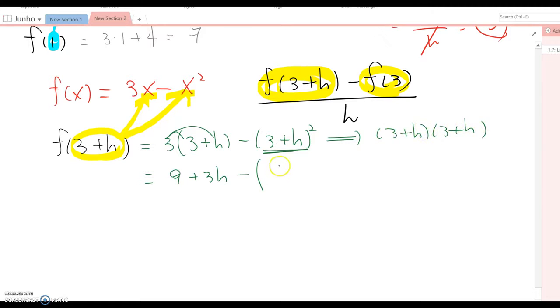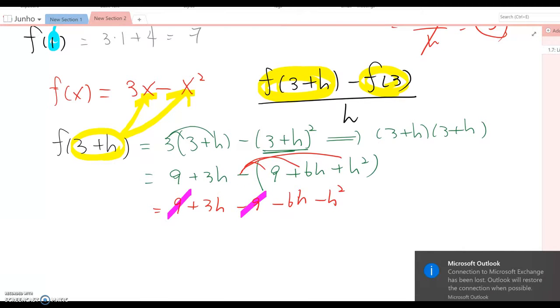Then you will get 9 plus 6h plus h squared. Now open the parentheses: 9 plus 3h minus 9 minus 6h minus h squared. Combine like terms, and this is gone. It becomes negative 3h minus h squared.